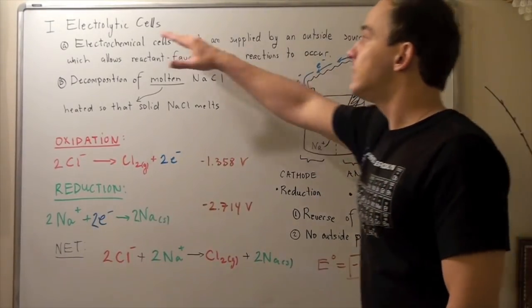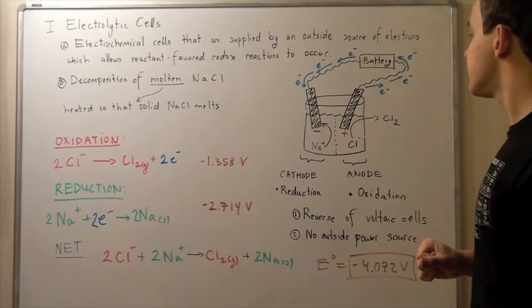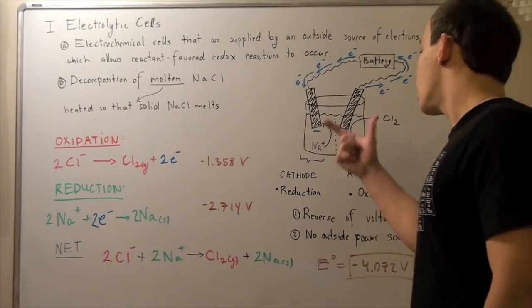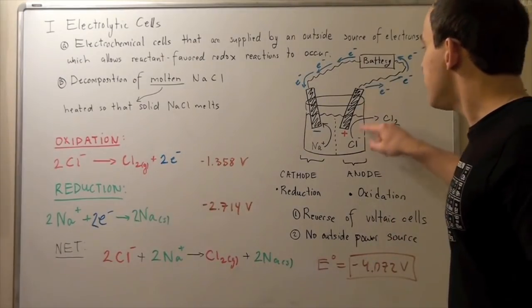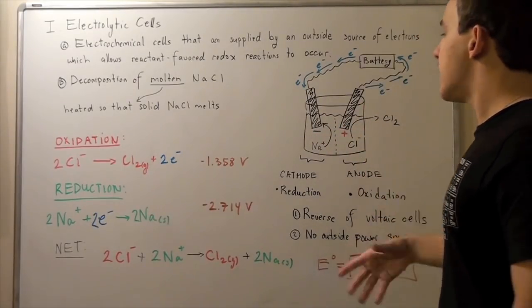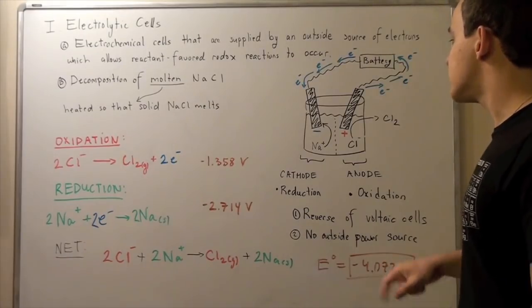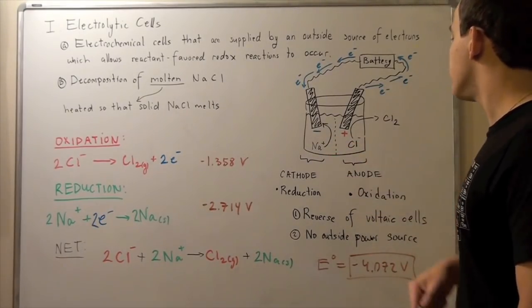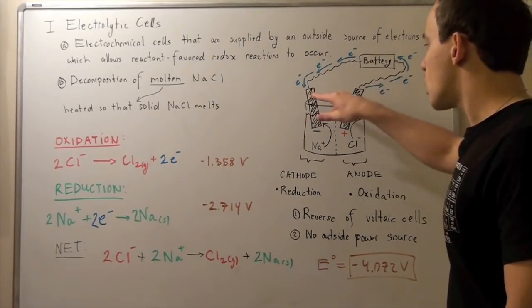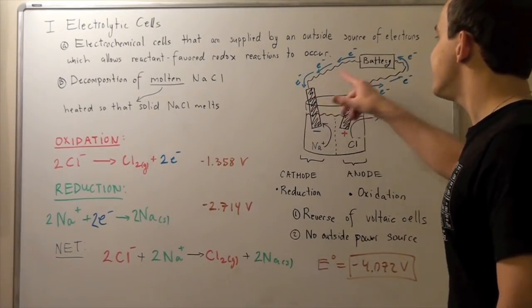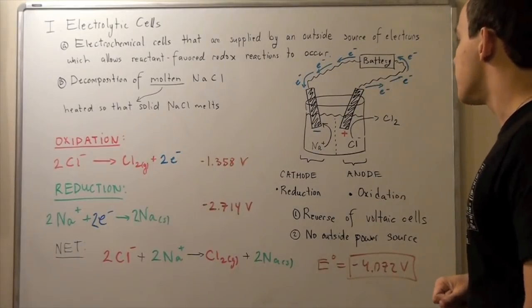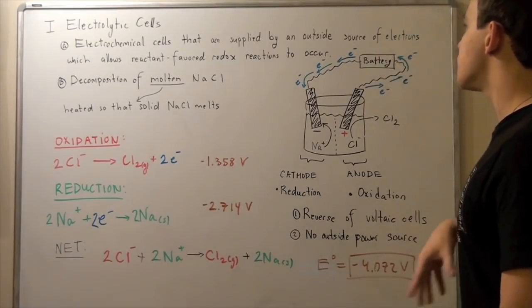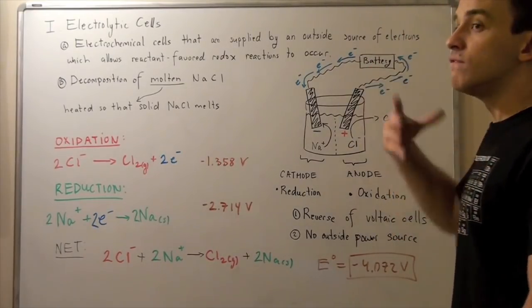So let's look at our electrolytic electrochemical cell. So it's composed of not two half cells, but one half cell, so one beaker. Now within this beaker, we have melted or liquid sodium chloride. So we have a bunch of sodium molecules or sodium ions and chloride ions. So these two electrodes are inert. So they're made from the same exact material. And what happens is we connect these guys to an outside power source like a battery or a voltage cell.